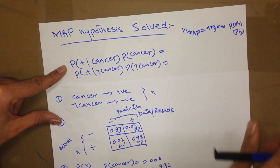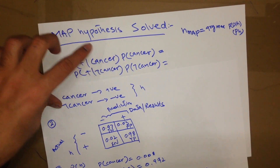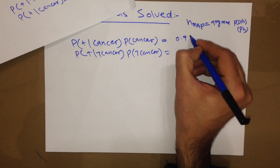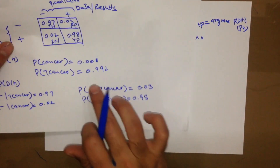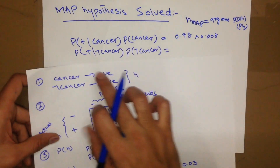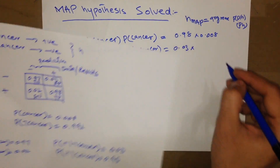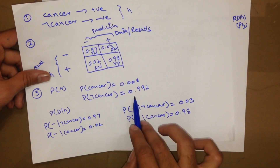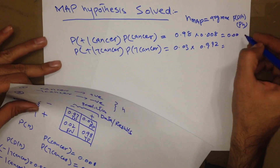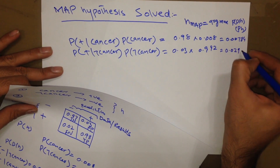Pasting the values: the probability of positive given cancer is 0.98, which gets multiplied by the probability of cancer 0.008. And the probability of positive given not cancer is 0.03, which gets multiplied by the probability of not cancer 0.992. The final values are 0.00784 for the cancer hypothesis and 0.02976 for the not cancer hypothesis.